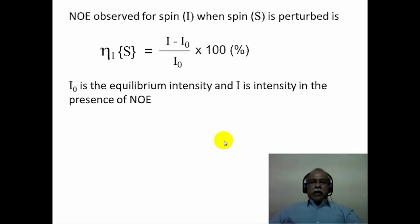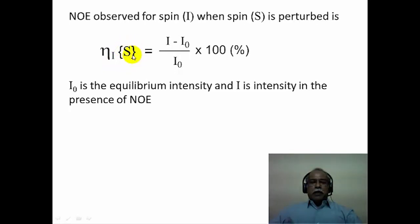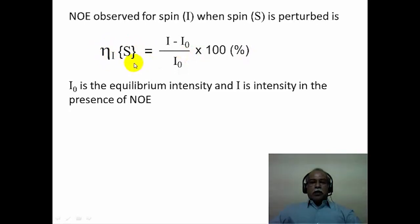The nuclear Overhauser enhancement observable for spin I when another spin S is perturbed is given by the expression for enhancement of spin I when S is saturated by a second radio frequency. This corresponds to (I − I₀) / I₀ × 100, giving the percentage of nuclear Overhauser enhancement, where I₀ is the equilibrium intensity measured without double irradiation and I is the intensity in the presence of NOE measured during double irradiation.